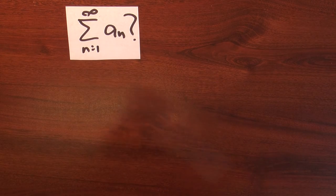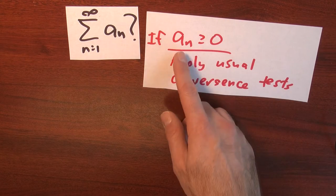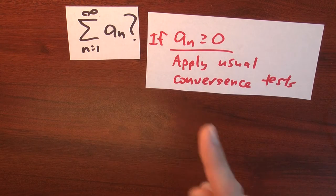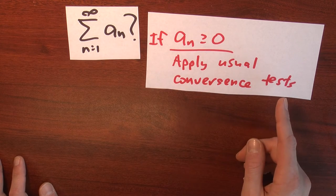But let's suppose the series passes that test. Then what do you do? Well, then you can hope that the terms in the series, the a sub n's, are all greater than or equal to 0. Because if you've got a series all of whose terms are non-negative, then you can apply all the usual convergence tests.